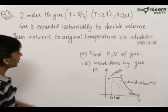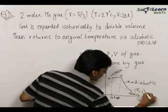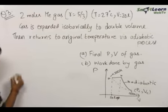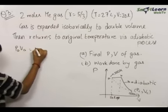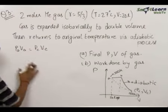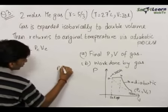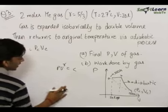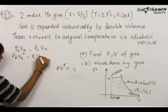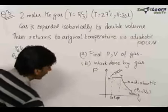We now need to find out the final pressure and volume of the gas — that is, Pc and Vc at point C. For that, let us first write the equation: Pa × Va = Pc × Vc. This is true because A to C is an isotherm, therefore Pa·Va = Pc·Vc. For the adiabatic process B to C, we know that PV raised to the power gamma is constant, therefore Pb × Vb^γ = Pc × Vc^γ.